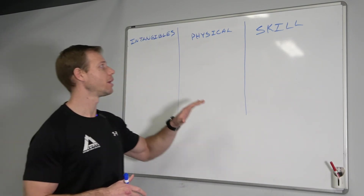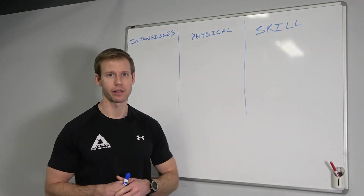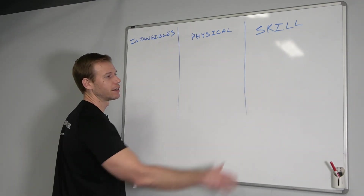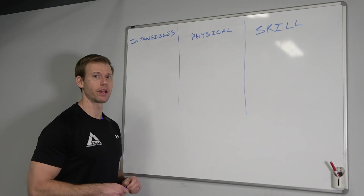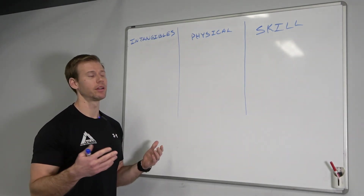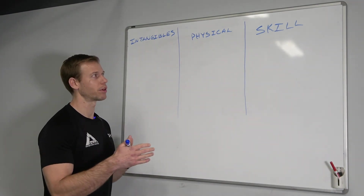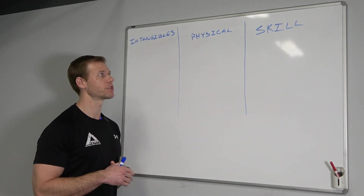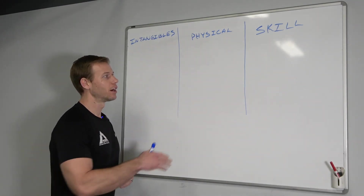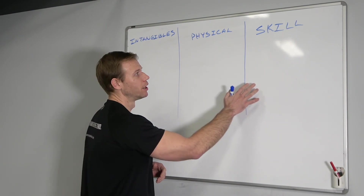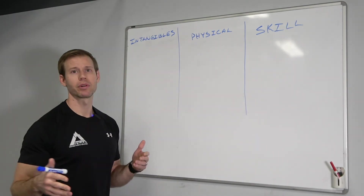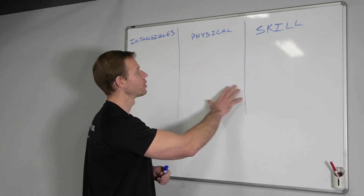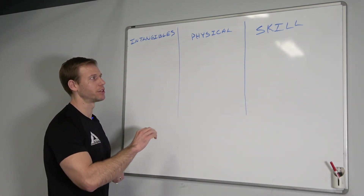Before we dive into specifics about training, we're going to talk about the three different big components of what makes up a successful athlete. First, skill — when we talk about sport performance, skill is needed at all levels. The more skill you have, the more advanced an athlete you're going to be. As we develop our athletic career and progress from youth sports to higher levels of competition, our skill needs to be honed, and it should be based upon proper foundational knowledge.